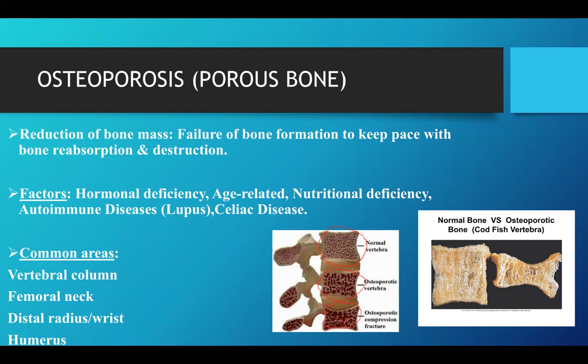Over time, this bone can become what is shown in the figure here, known as a codfish vertebra. There can be a lot of reasons that lead to osteoporosis, including hormonal deficiencies, age-related degeneration, nutritional deficiency, autoimmune disease, and celiac disease. Celiac disease is where your immune system has gluten sensitivity, causing an immune reaction. A simple fix is to have a gluten-free diet.